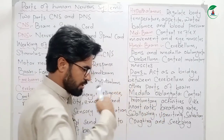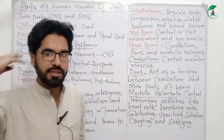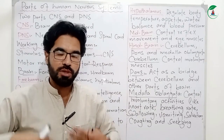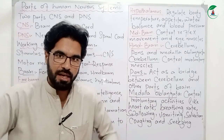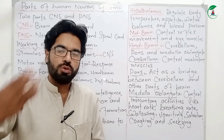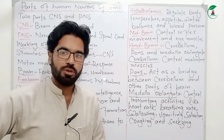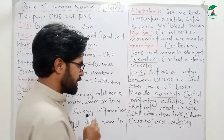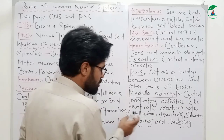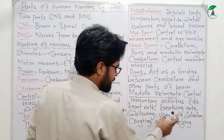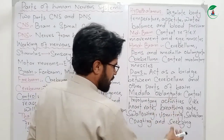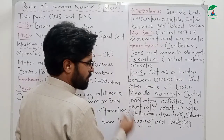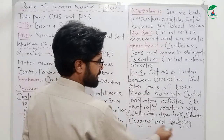The brain controls the nerves from the skin. We have to breathe — functions like breathing and sneezing are controlled involuntarily.